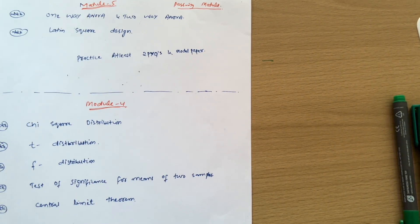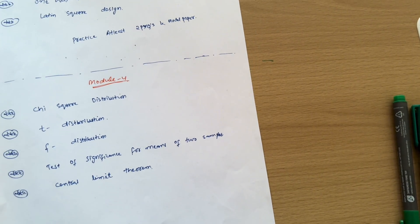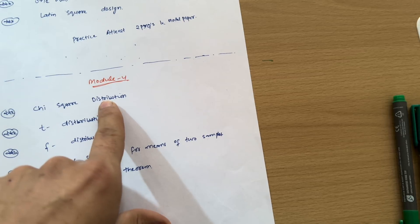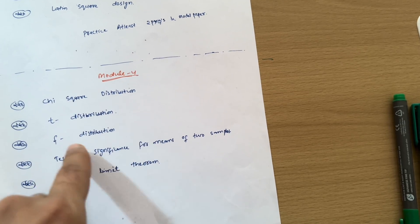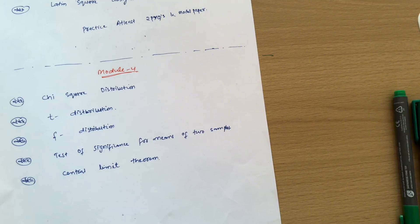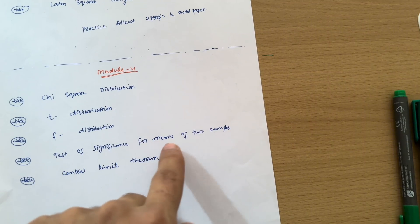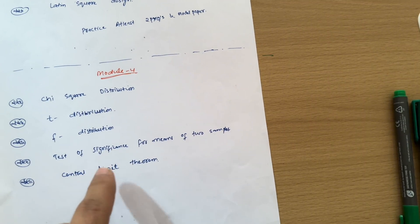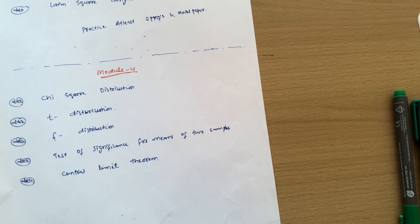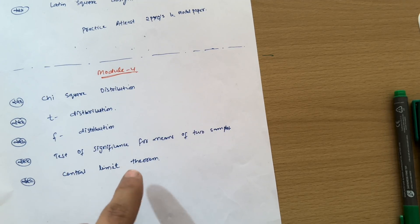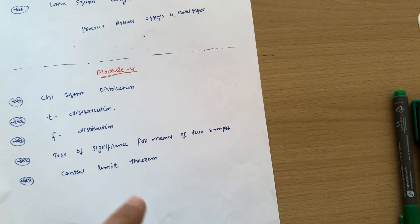We are left with Module 4, in which you have to go through chi-square distribution — practice three problems. Also cover t-distribution and F-distribution; videos are available. Topics include test of significance for means of two samples, and the central limit theorem — sometimes VTU will ask you to state and prove the central limit theorem, or attach a problem with it. These are all the concepts for your mathematics subject.